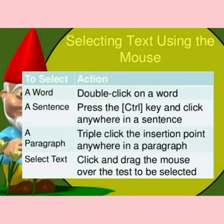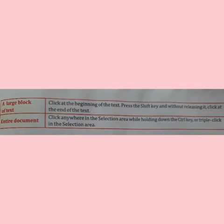To select a word, double click on that particular word — keep the cursor on that word and give a double click. To select a sentence, hold down the Control key and click anywhere on the sentence. To select a paragraph, triple click anywhere in the paragraph, or double click in the left margin of the paragraph.